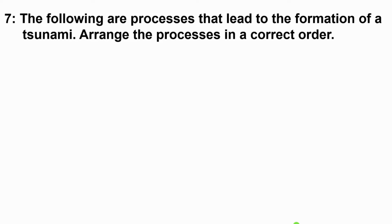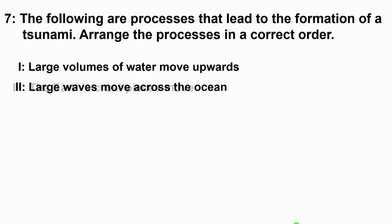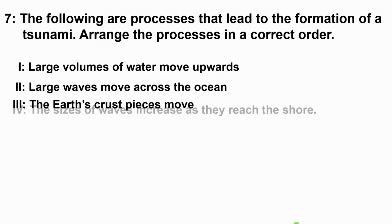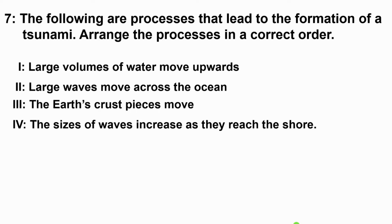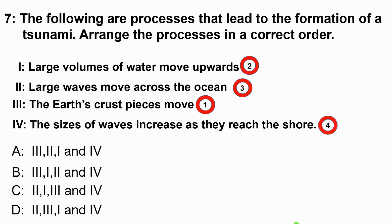Question 7: The following are processes that lead to the formation of a tsunami. Arrange these processes in correct order. Hint 1: large volumes of water move upwards. Hint 2: large waves move across the ocean. Hint 3: the earth crust pieces move. Hint 4: the sizes of waves increase as they reach the shore. The correct order is: first, the earth crust pieces move; then large volumes of water move upwards; then large waves move across the ocean; then the sizes of waves increase as they reach the shore. The correct answer is B.